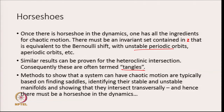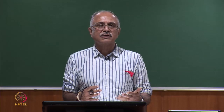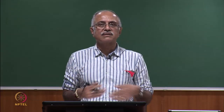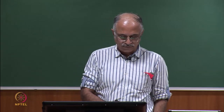Methods to show that a system can have chaotic motion are typically based on finding saddles in the phase space, identifying their stable and unstable manifolds, and then showing that these manifolds intersect transversely rather than joining smoothly. Therefore there must be a horseshoe in the dynamics, and because there is a horseshoe there must be chaos.